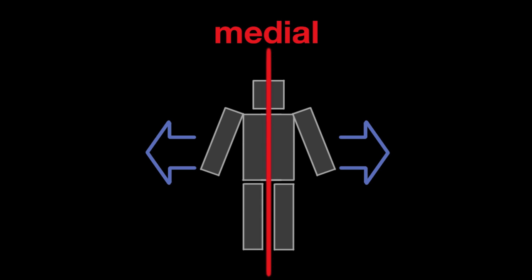To get around the body, we need a few basic vocabulary terms. We need a word that describes when something is close to the middle of the body. We also need a word that lets us know when something is closer to the side of the body. When something is close to the center of the body, we use the term medial. When something is close to the side of the body, we use the term lateral.